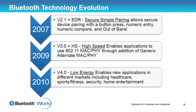Version 3.0 came out in 2009 and introduced something called High Speed. This enables applications to use an alternate MAC and PHY — the first based on the IEEE 802.11 specification — allowing higher-speed MACs to send large amounts of data very quickly. Then the technology causing all the buzz was introduced in 2010 with version 4 of the specification, which introduced Bluetooth Low Energy: a completely new way of getting data between two devices at very low power.